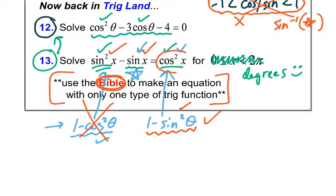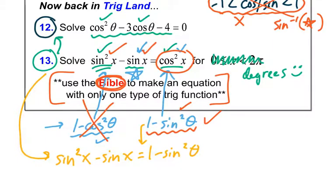All right, let's do that right now. So the one we're going to change is the cosine squared. Let's do that down here on the bottom. So we said the sine squared is going to stay there, minus the sine of x, which we couldn't change, equals, now instead of cosine squared, I'm going to put, by the Bible, 1 minus sine squared. Now, just looking at that, do you notice that everything is the same trig? That's great.